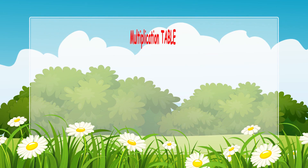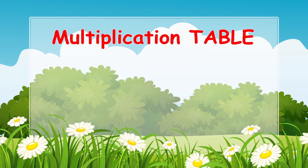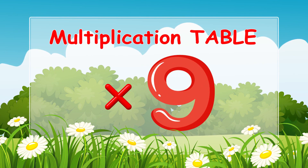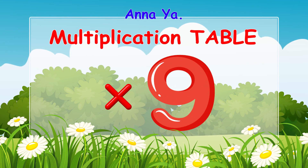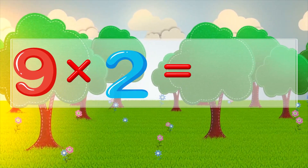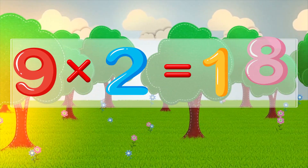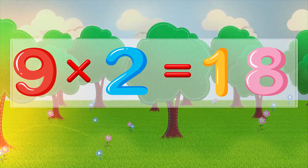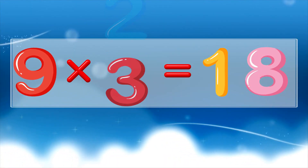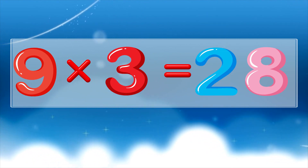Nine times table. Nine times two is eighteen, nine times three is twenty-seven.